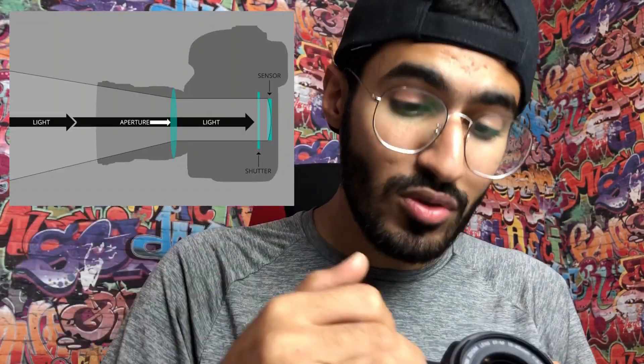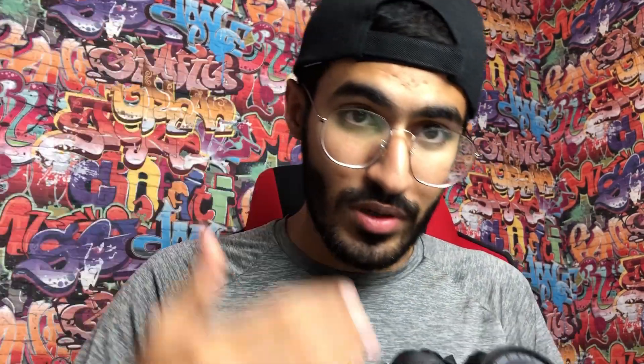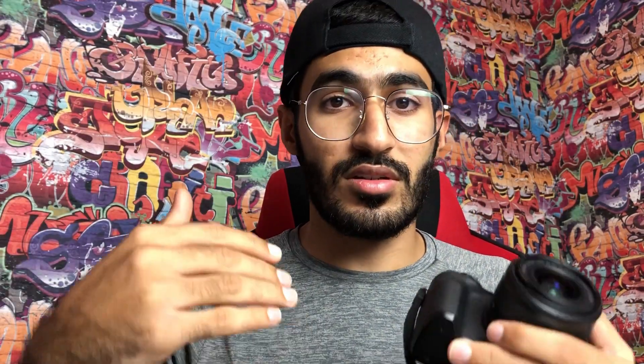This triangle helps us control the outcome of our image, and each one of these three parts controls light in a different way. Shutter speed is the duration that you allow light to go into the camera and onto the sensor. Naturally, the more you allow light to go in, the brighter your image will be; the less time you allow light in, the darker your image will be.